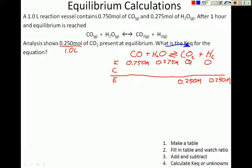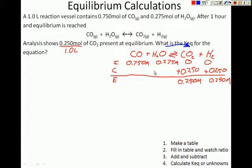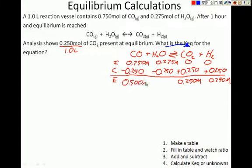In order to go from zero to 0.250, CO₂ must have increased by 0.250, and H₂ also must have changed by +0.250. Since it's a 1:1:1:1 ratio, water must have decreased by −0.250, and same with carbon monoxide, −0.250. Therefore, our equilibrium concentration of CO is 0.50 M, and the equilibrium concentration of water is 0.025 M.